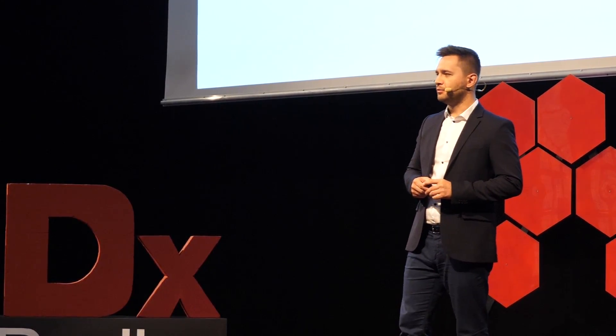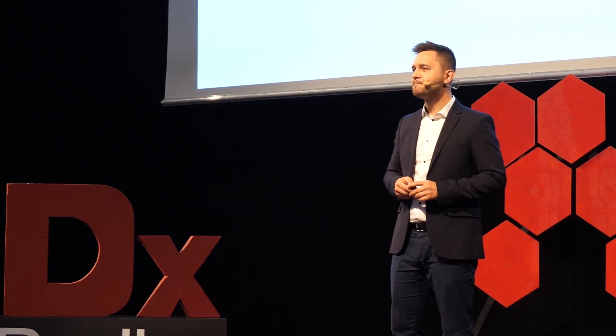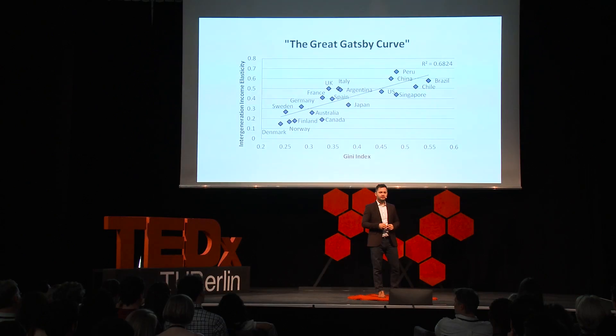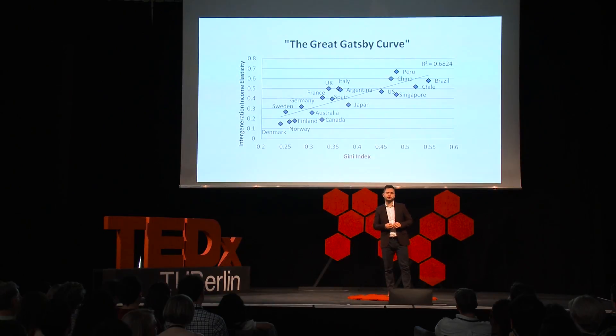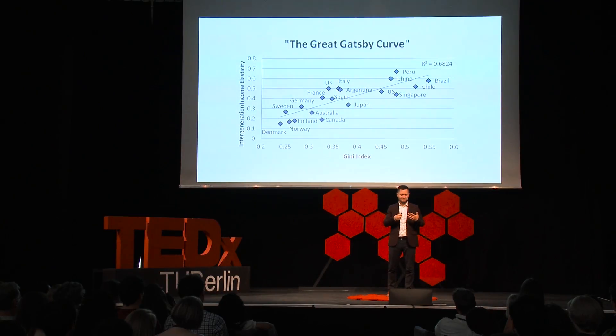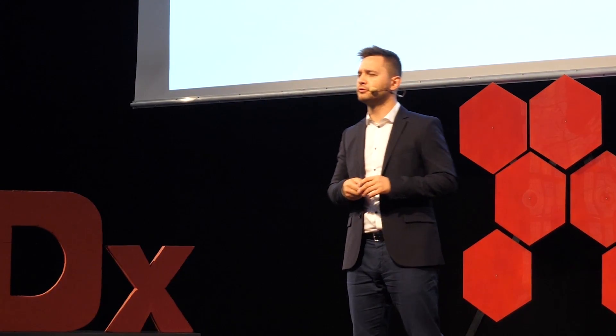If you watched the movie or read the book about Jay Gatsby, he was an example of a very socially mobile person — he started very humble but was able to throw very expensive parties. There's something economists call the Great Gatsby Curve, which shows the relationship between socioeconomic inequality and intergenerational mobility. If your country is to the right and very high up, that's not good. Bottom left is ideal — Denmark is there. The US is close to Brazil and Peru.